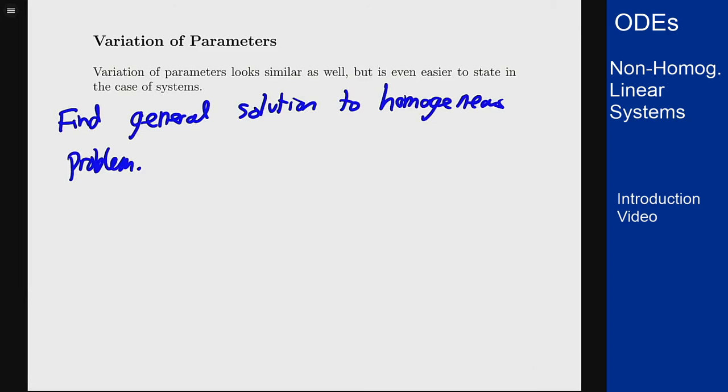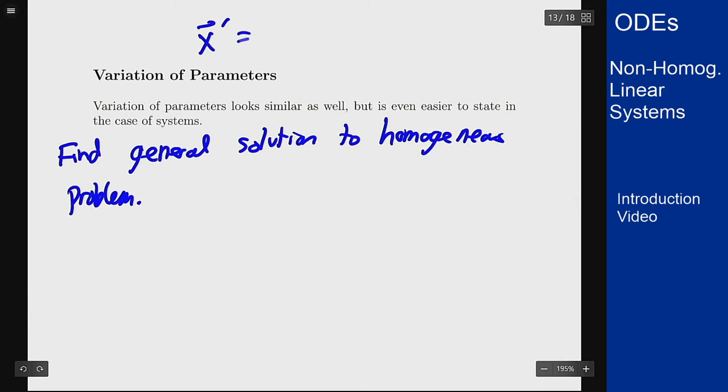We're going to say the problem that we start with is x' = A(t) times x plus our function f that is the non-homogeneous part. I'm going to allow this to depend on t because it could, in practice it'll be constant coefficient but it could depend on t, it doesn't affect the method.